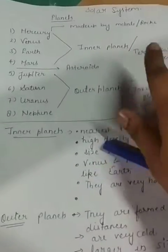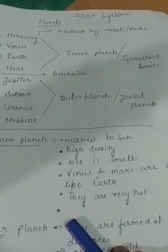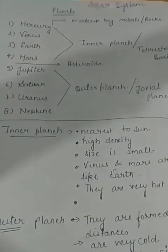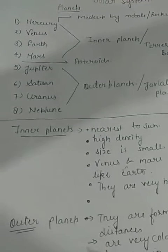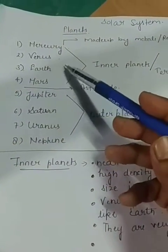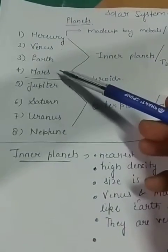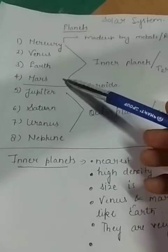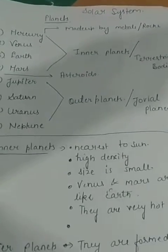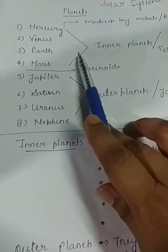You can call the inner planets terrestrial bodies. Why do we call them terrestrial bodies? Because these are the planets which are very nearest to the sun and they look like the shape of Earth. These inner or terrestrial planets are nearest to the sun, and they are made up of metals and rocks.